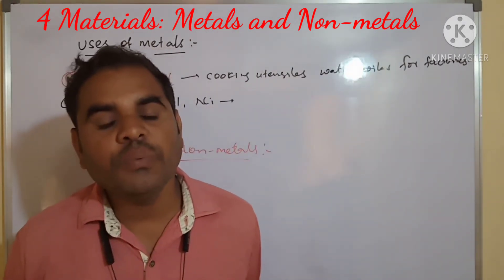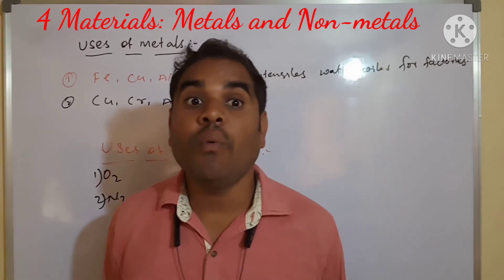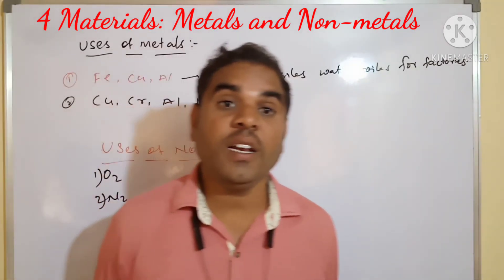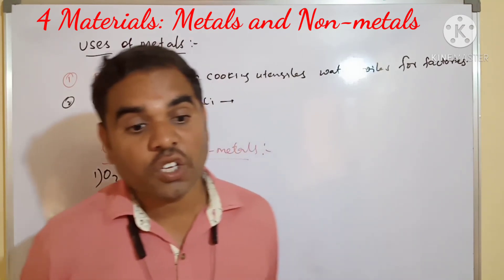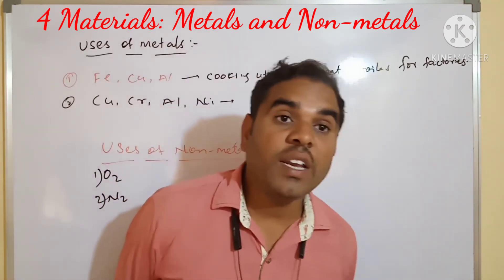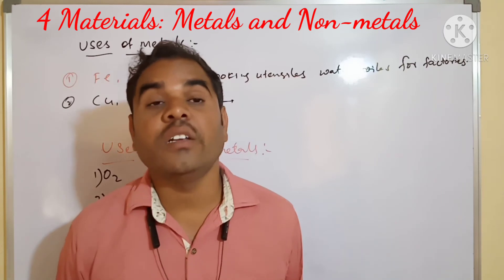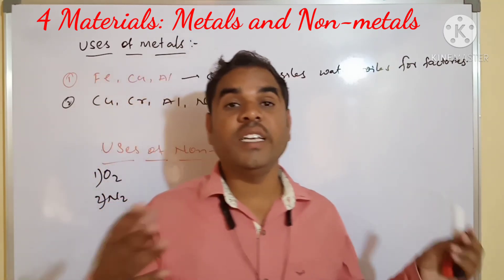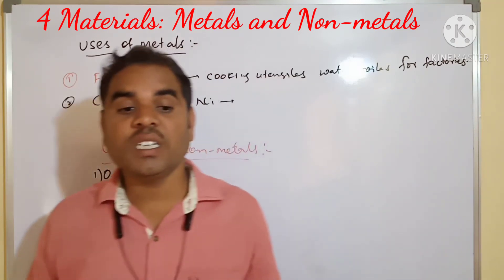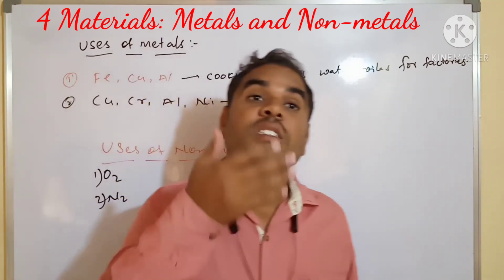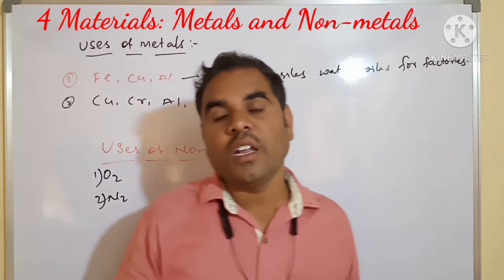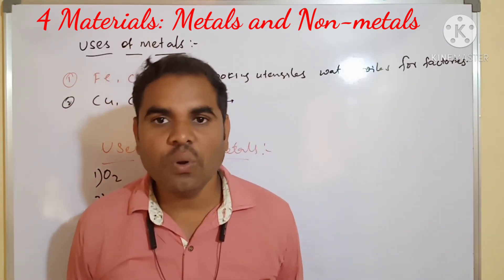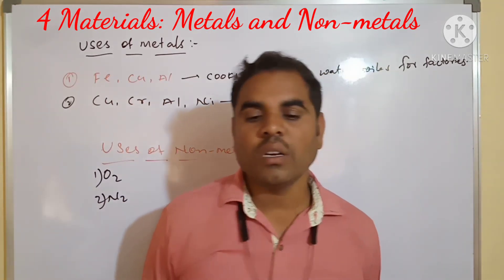Phosphorus and sulfur are used for making fireworks and crackers. Sulfur is also used for the vulcanization of rubber, which gives hardness to rubber.